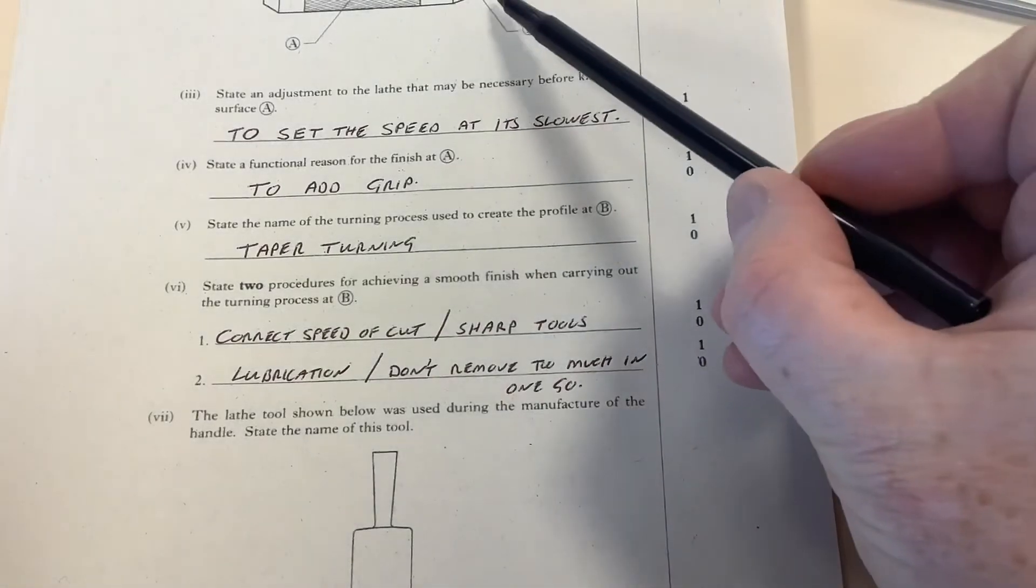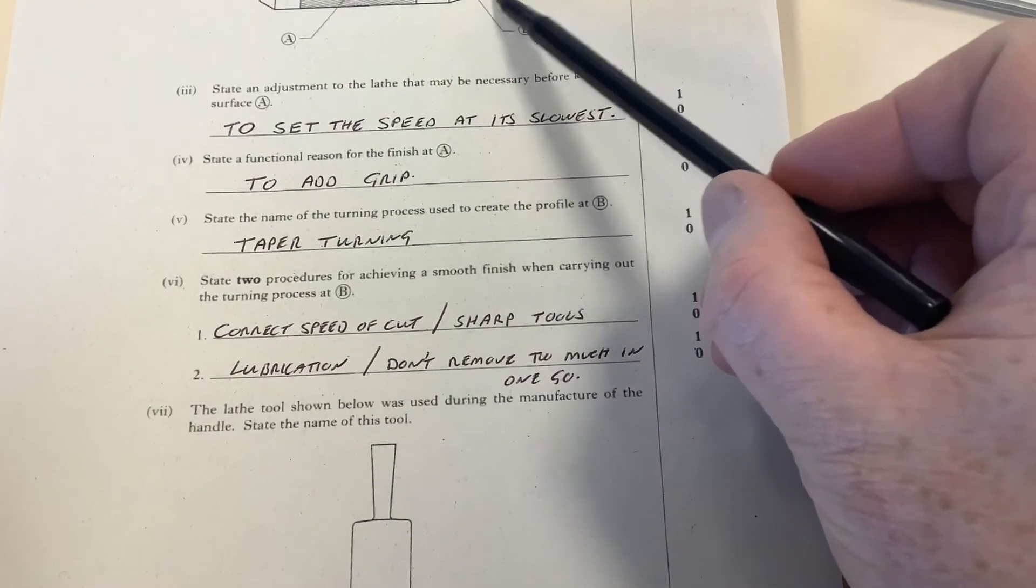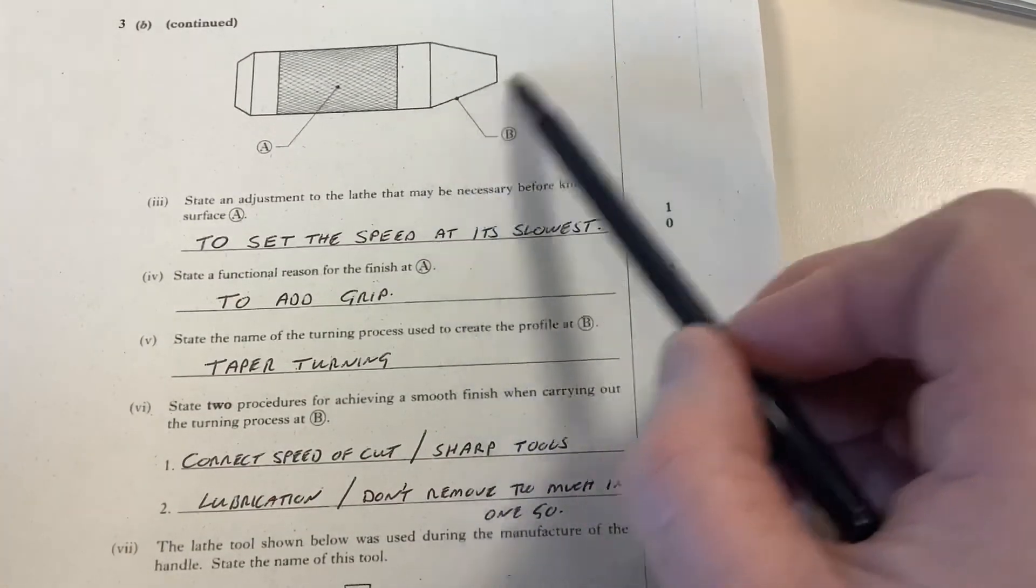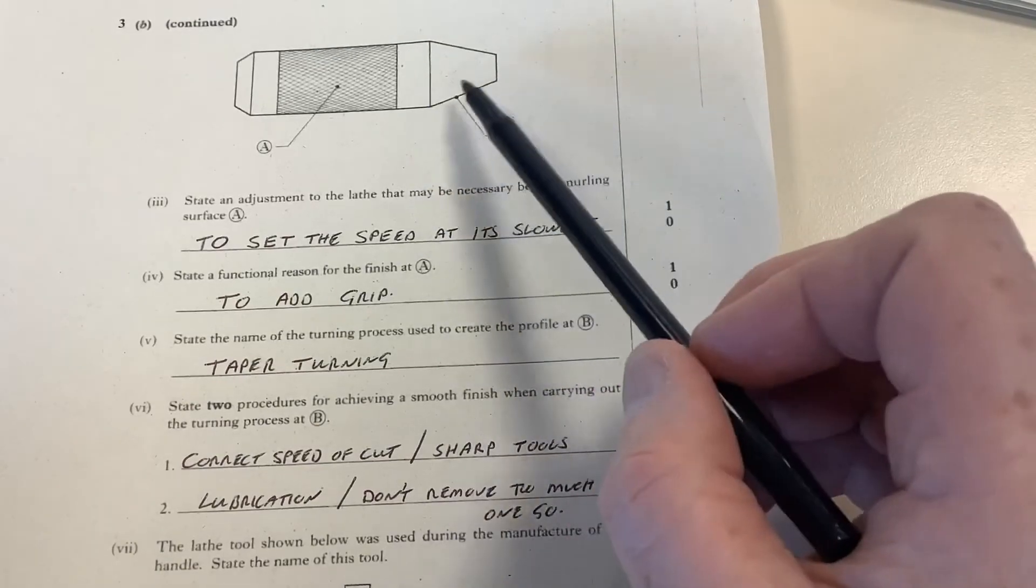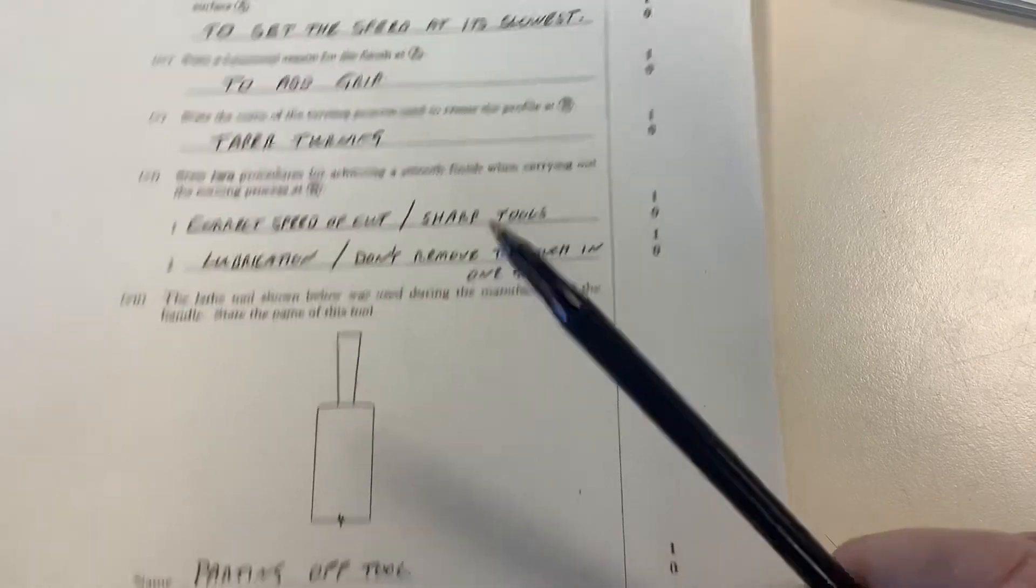You're only going to take maybe a quarter of a millimeter each time—every time you pass, you'll take a wee bit more and a wee bit more. If you try to take like a millimeter off in one go, it'll just tear the metal. So that's that.